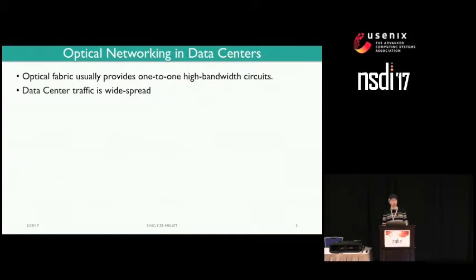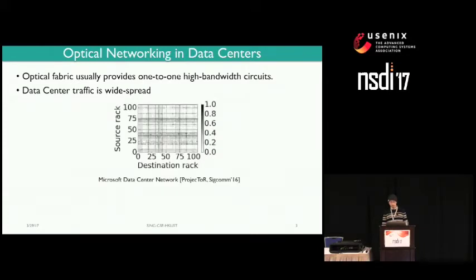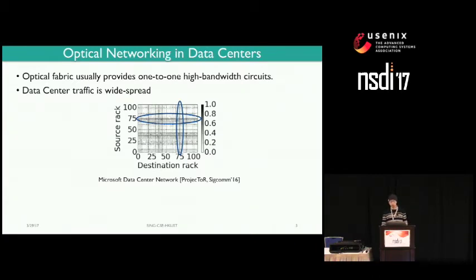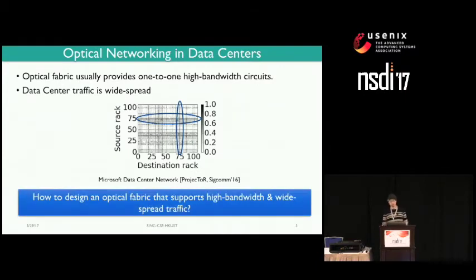But another characteristic of data center traffic is that it is widespread. We can see from this trace from the Microsoft data center network — the y-axis are the source racks and the x-axis are the destination racks, and the dots indicate the frequency of communication between source and destination pairs. Each source can send to multiple other racks, and each destination can also receive from multiple other racks. This is also true in other data centers, for example Facebook and Tencent, and we have described the traces of their data center traffic in our paper. This poses a challenge: how do we support both high bandwidth and widespread traffic?